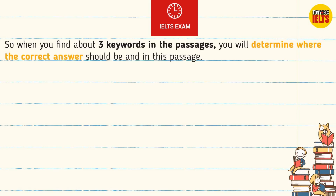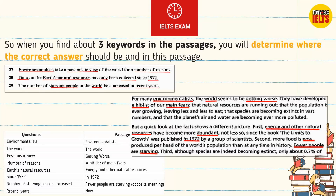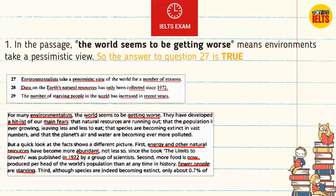When you find about three key words in the passage, you will determine where the correct answers should be. In the passage, 'the world seems to be getting worse' means the author takes a pessimistic view. So the answer to question 27 is TRUE.